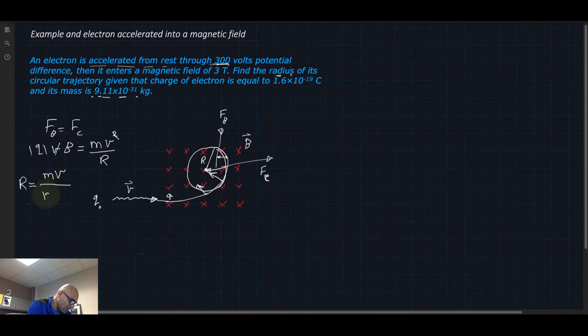So this is actually the equation that we need to use to find R for this electron. Let's look at it. Do we have the mass of the electron? Yes, that's given.